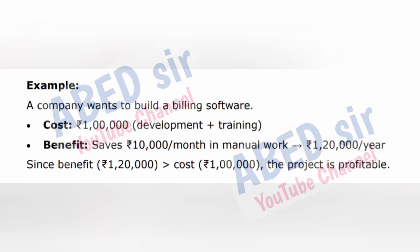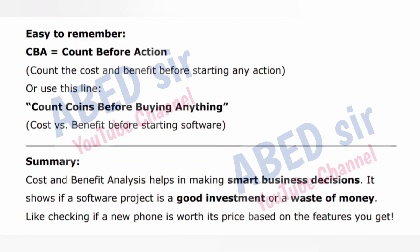Example: a company wants to build billing software. Cost: 1 lakh rupees for development plus training. Benefit: saves 10,000 rupees per month in manual work, which is 1,20,000 rupees per year. Since benefit (1,20,000) is greater than cost (1,00,000), the project is profitable. Easy to remember: CBA equals 'Count coins Before Action' — count the cost and benefit before starting. Summary: Cost and benefit analysis helps in making smart business decisions. It shows if a software project is a good investment or a waste of money — like checking if a new phone is worth its price based on the features you get.